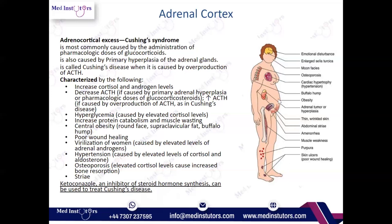Clinical features of Cushing's syndrome visible on examination include: moon face, osteoporosis, cardiac hypertrophy due to hypertension, buffalo hump, central obesity pronounced on the lower or central abdomen due to fat redistribution, abdominal striae, amenorrhea, muscle weakness, and purpura. Ketoconazole — an inhibitor of steroid hormone synthesis — can be used to treat Cushing's disease. Emotional disturbances may also be present because cortisol regulates stress response and has mood effects.